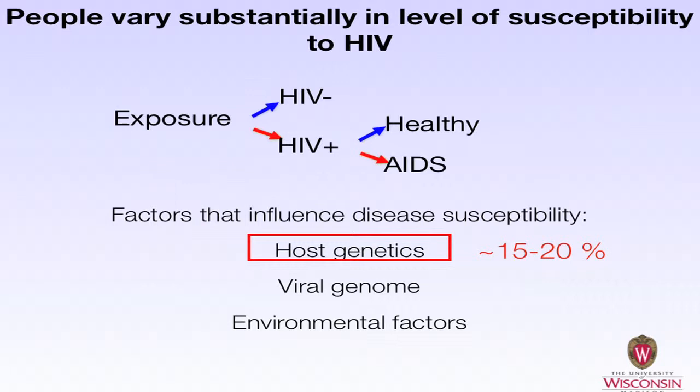As many of you know, people vary very substantially in their level of susceptibility to HIV. This can occur at a couple of different stages. First, at the exposure to HIV, some people become infected and others don't, and there are associations with that. And in those who become infected with HIV, some progress more rapidly to disease and others progress more slowly. There are many factors that can influence this disease susceptibility, including host genetics, viral sequence, and environmental factors.